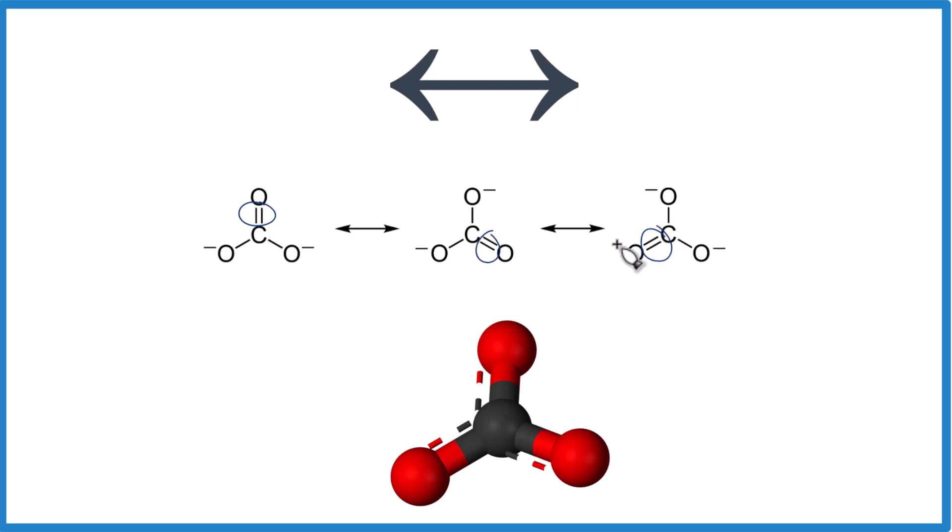So when we draw Lewis structures, it's a little bit complicated. We want to show the double bond can shift, so we have to draw three structures. We use this arrow here to show that. But they aren't switching back and forth, really. It's just an average of these three.